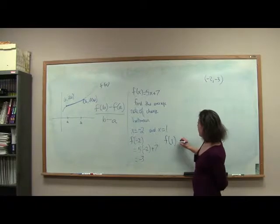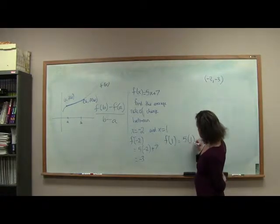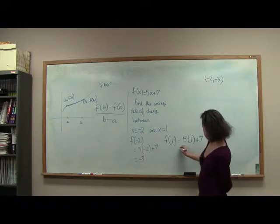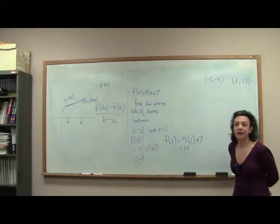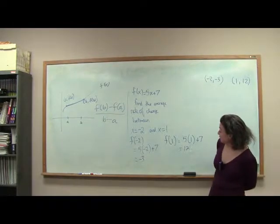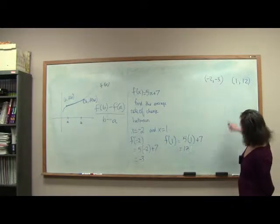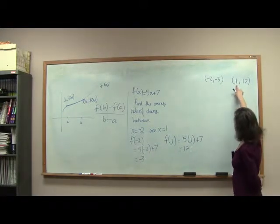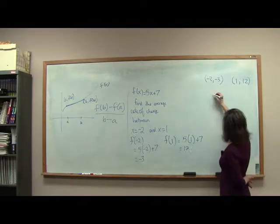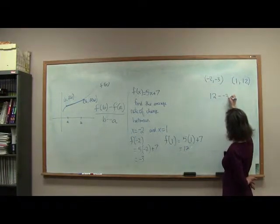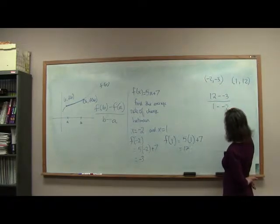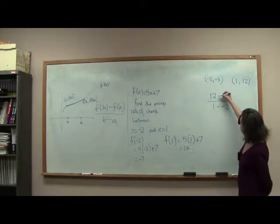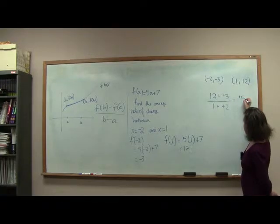Next, let us compute F of 1. That's 5 times 1 plus 7, so we get 12. How do we compute our average rate of change between these guys? It's the change in our function values over the change in our X values. So it's 12 minus negative 3, divided by 1 minus negative 2. Remember, minus a negative is the same as plus a positive — we get 15 over 3, which is 5.